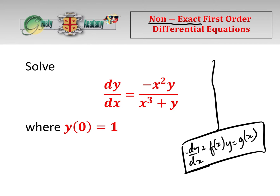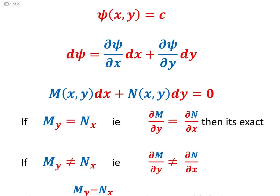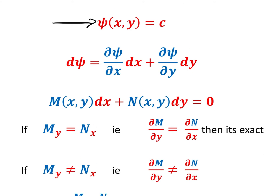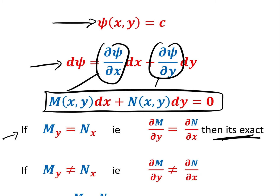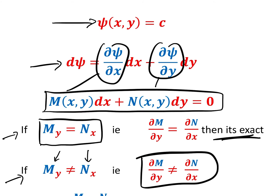The next thing we would do is look to see if it was exact. The way we do that — we've already done this in previous videos — is that we would have a look here. Assuming we have a function psi(x, y) = c, then the total differential is dψ/dx · dx + dψ/dy · dy. That gives us this equation here, where this is M and this is N. We had this test that if it's an exact equation, the differential of M with respect to y equals the differential of N with respect to x, i.e., dM/dy = dN/dx, then it's exact. What happens if the partial differential of M with respect to y is not equal to the partial differential of N with respect to x?